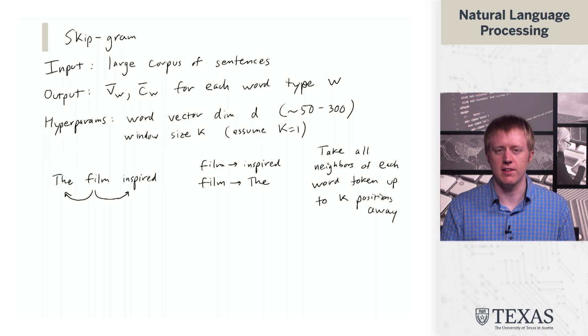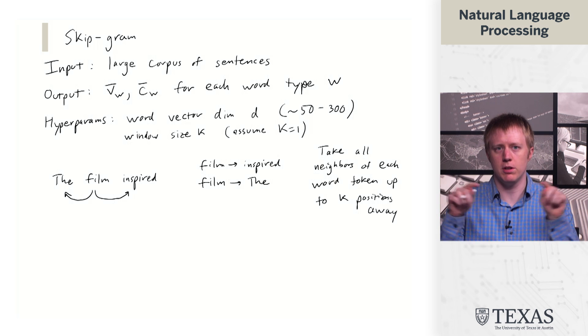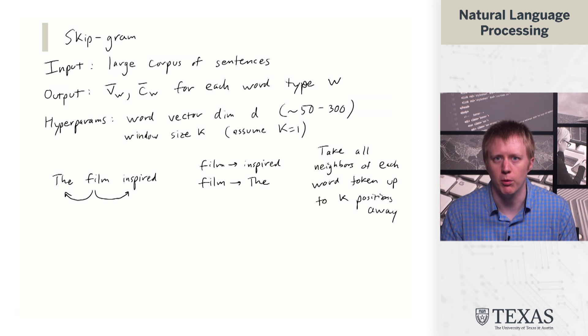Take all neighbors of each word token up to K positions away. So in this case, if K were equal to two, you would look two words on either side, if you had more words in the sentence.